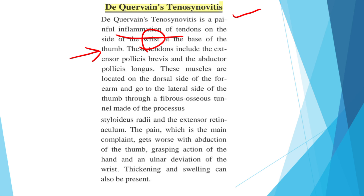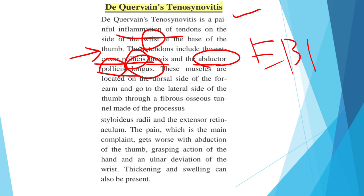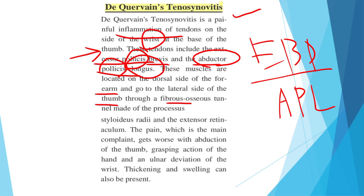In this condition, the inflamed tendons include extensor pollicis brevis — which provides extension at the thumb, 'brevis' meaning small — and abductor pollicis longus — which performs abduction of the thumb, 'longus' meaning long tendon. These muscles are located on the dorsal side of the forearm and travel to the lateral side of the thumb through a fibro-osseous tunnel made of the styloid process of the radius and the extensor retinaculum.